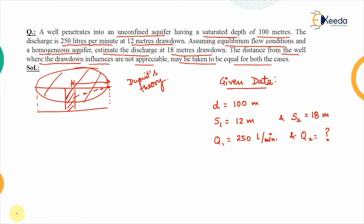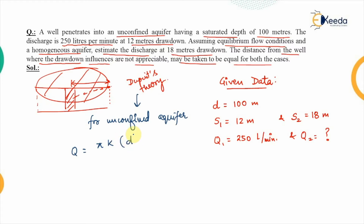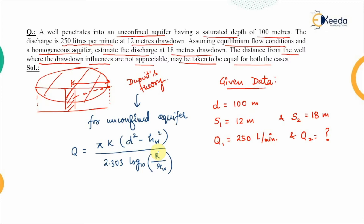Now the Dupuit equation for the unconfined aquifer is given as: Q equals pi times k — where k is the coefficient of permeability — times (d squared minus h_w squared), divided by 2.303 log base 10 of (R / r_w), where capital R is the radius of influence and r_w is the radius of the well.